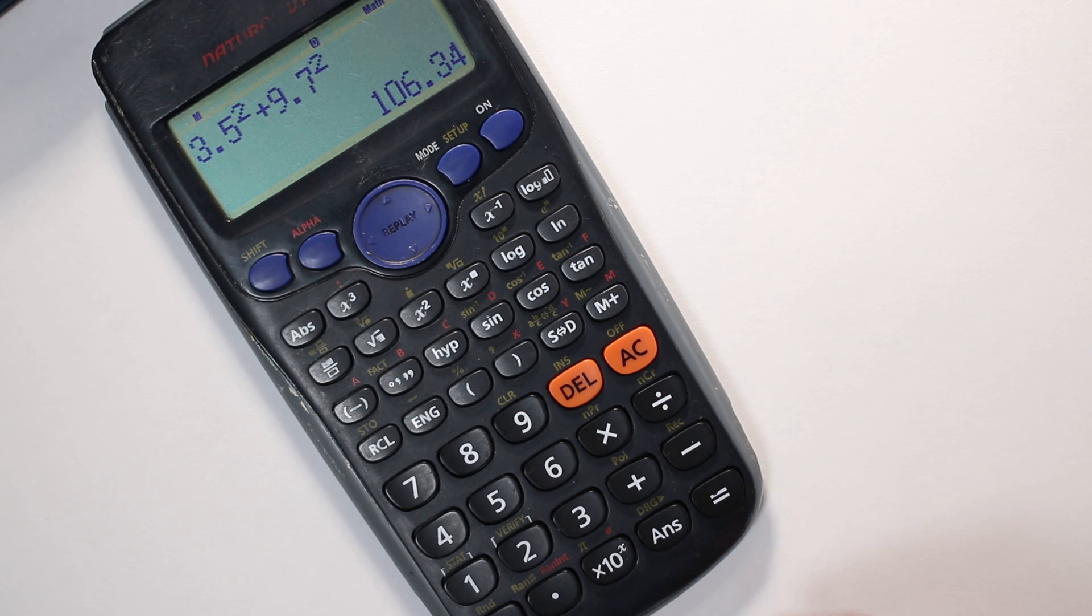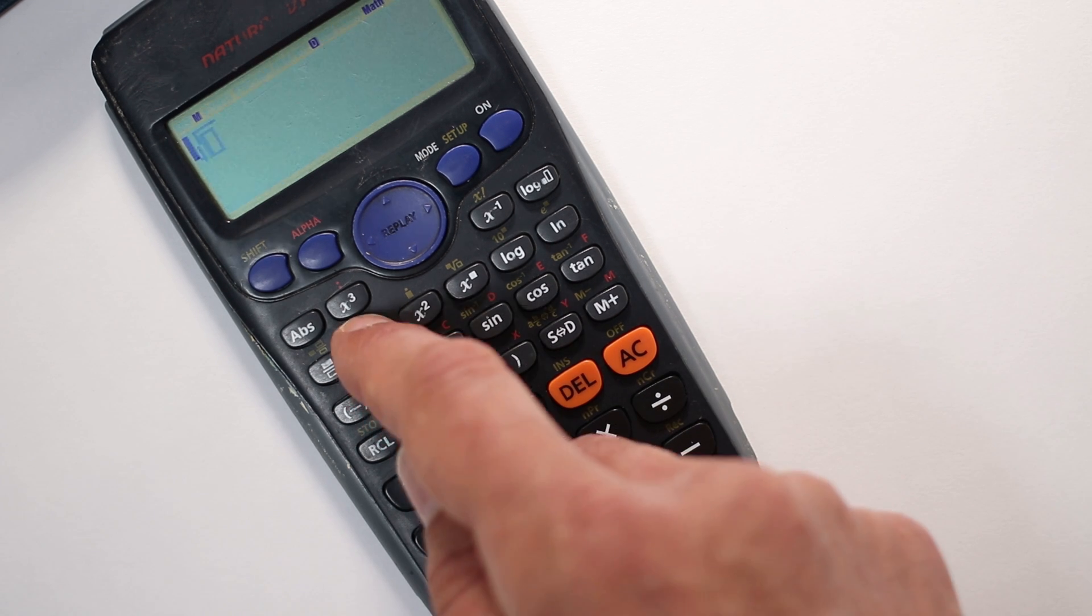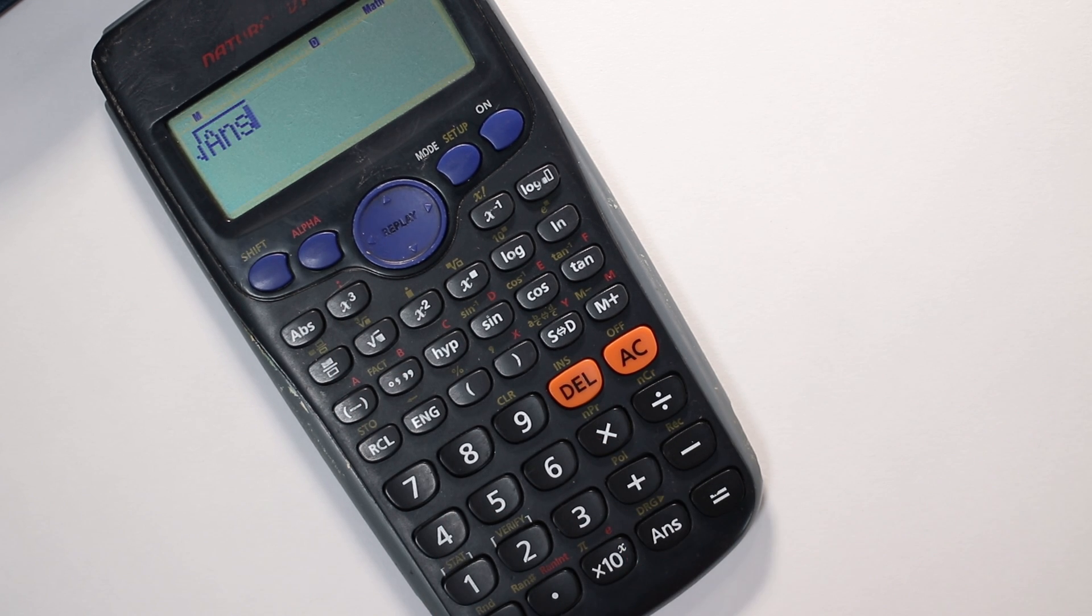The way to avoid that is if we go back to this stage where we've done 3.5 squared add 9.7 squared, that gives us 106.34. If we just type in the square root and then press the ans button, whenever you press that ans button it brings back the answer to the previous calculation. So that is going to find the square root of 106.34 for us, and it avoids us having to type it in again. That's useful because whenever you're writing stuff down from your calculator and whenever you're typing stuff into your calculator, there's just a chance that you might make a mistake. So if you can avoid that in any way, that's always the best thing to do.